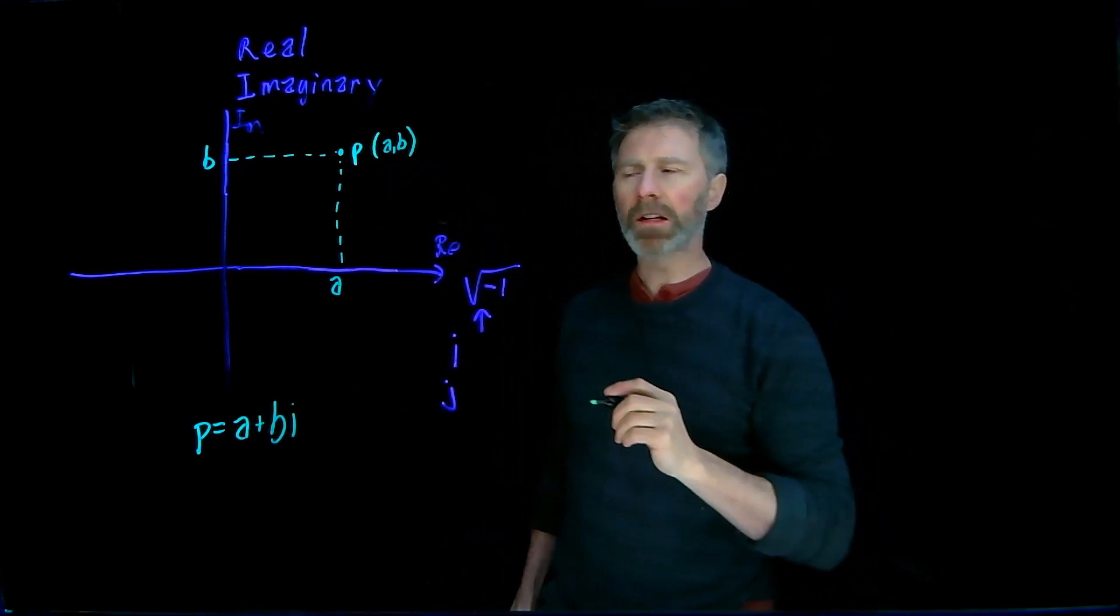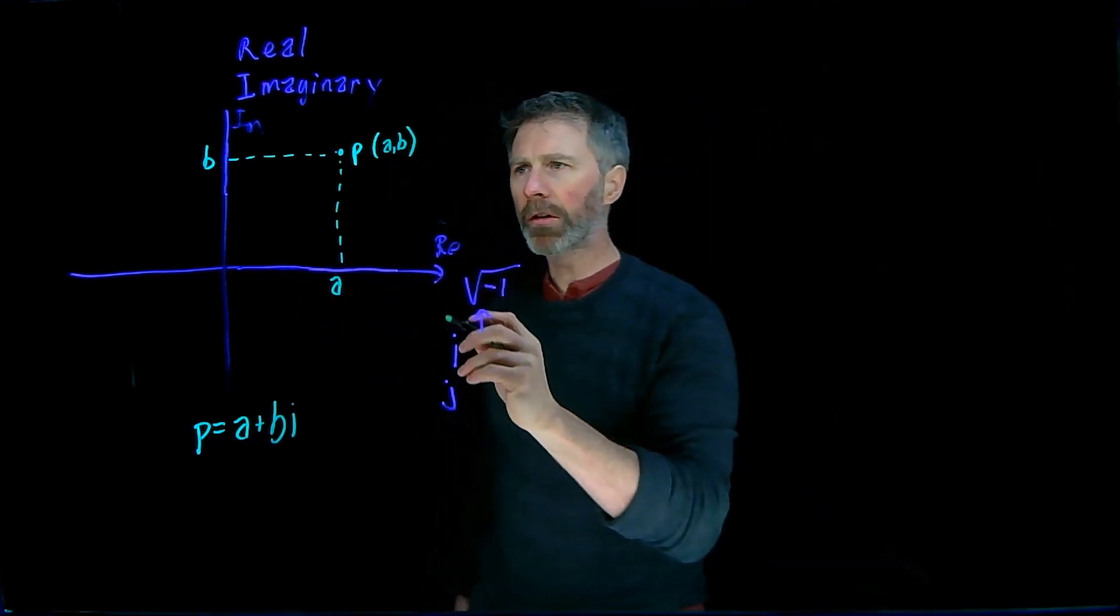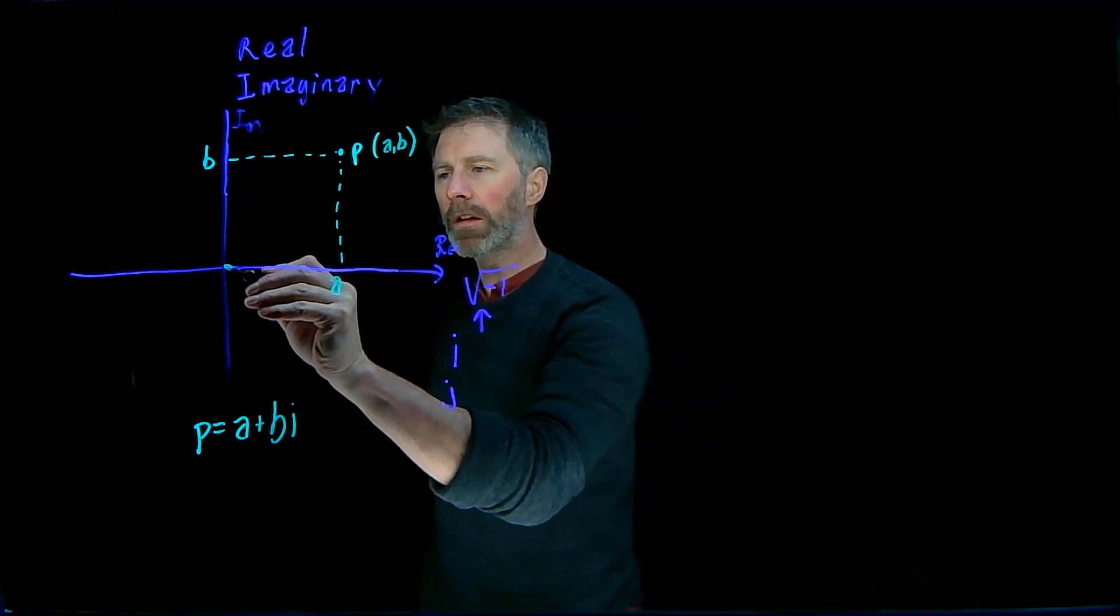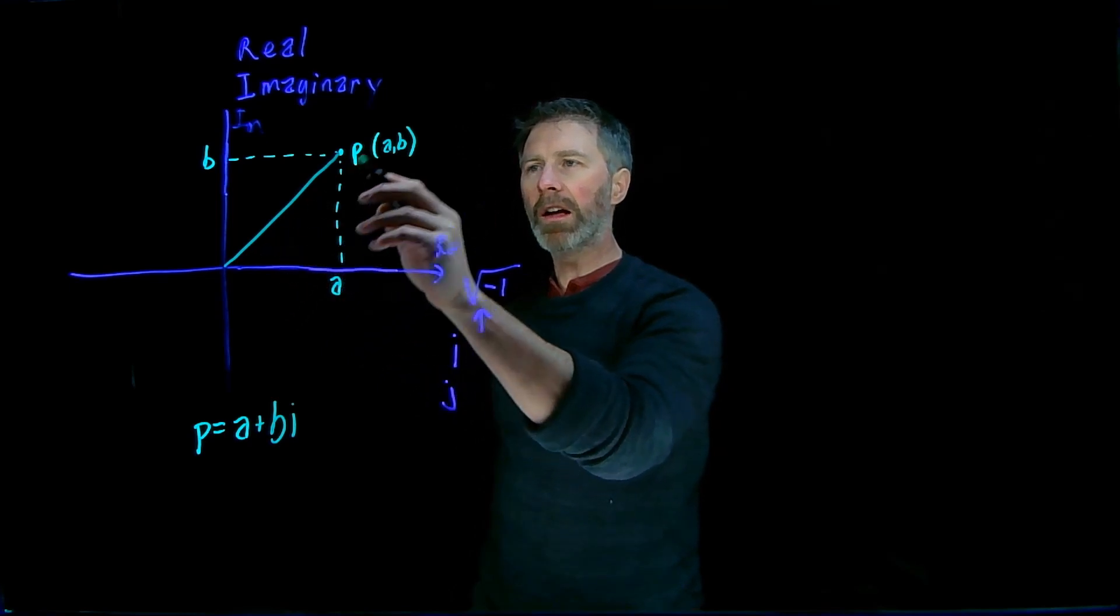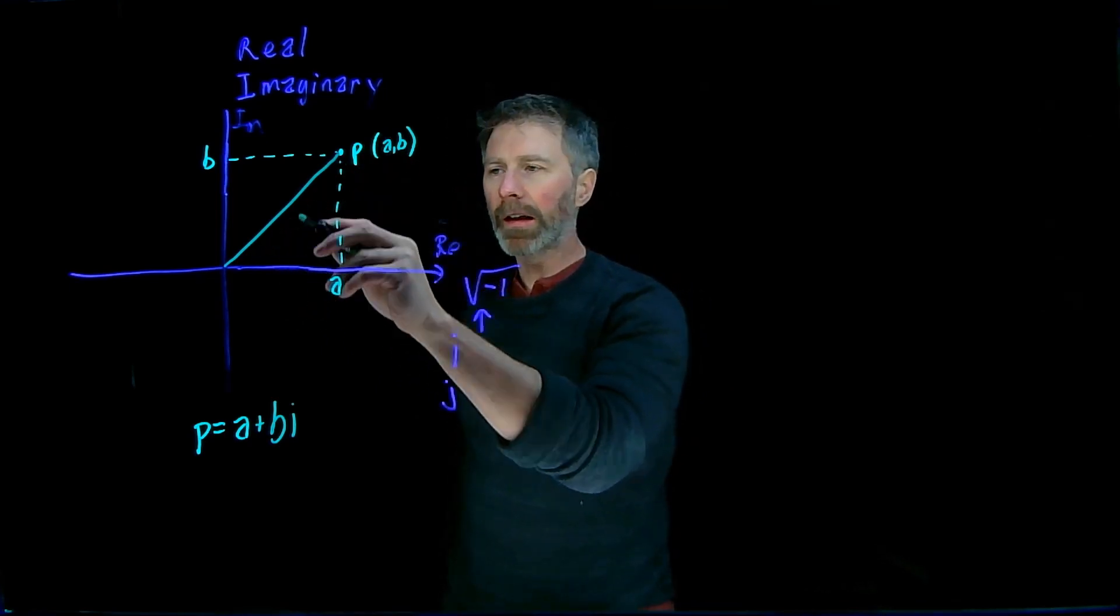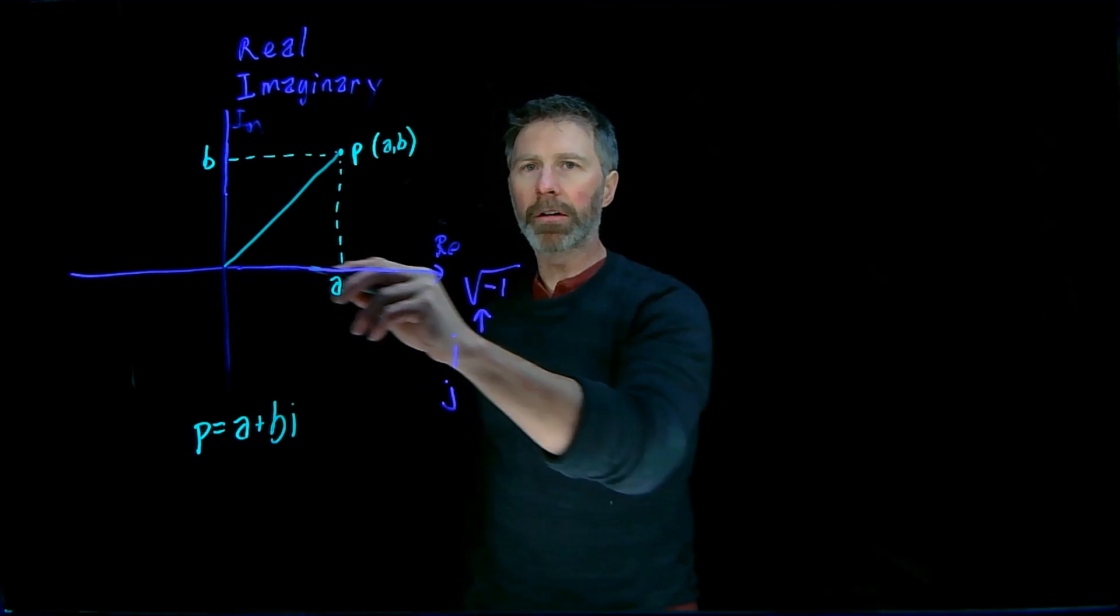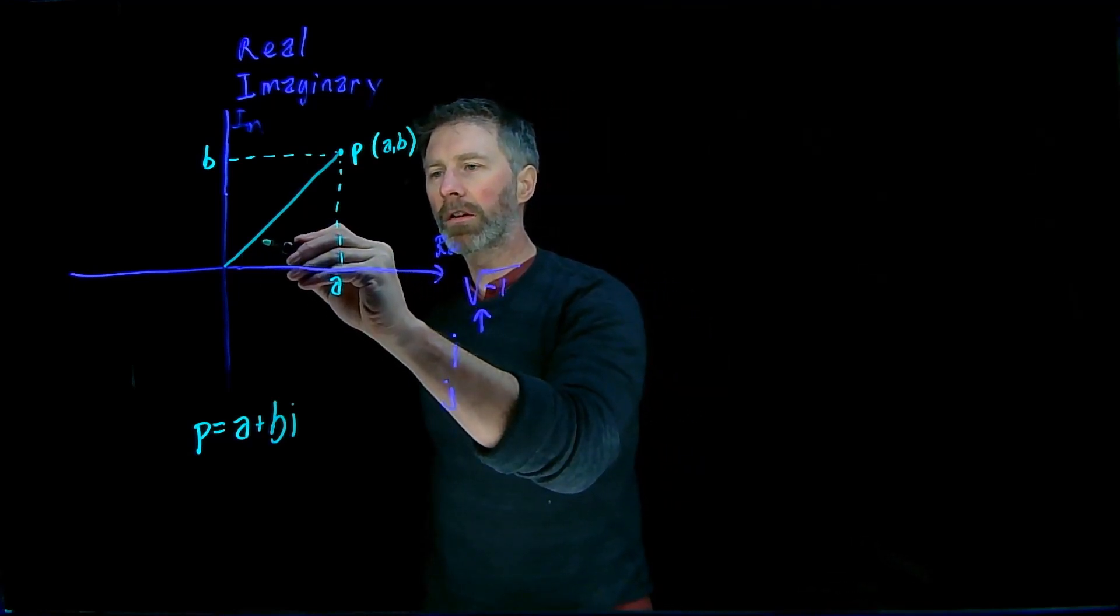The point can also be represented in polar notation. So polar notation uses the distance from the origin to the point, and it uses the angle that the line segment makes between that line and the positive part of the real axis. And let's call that phi.